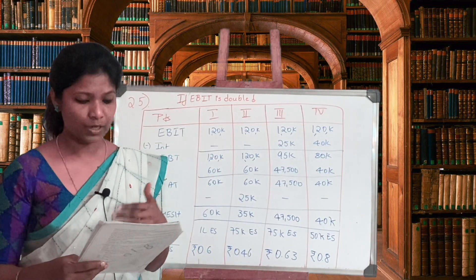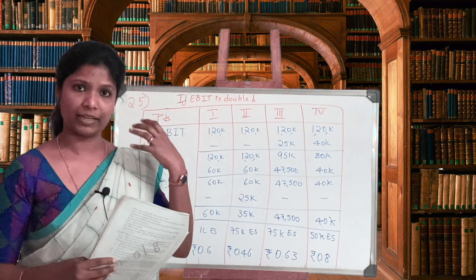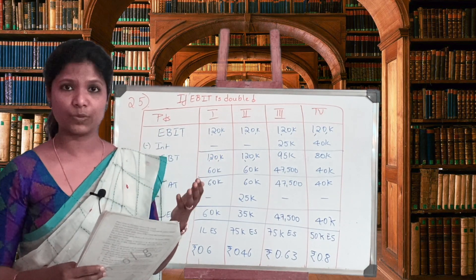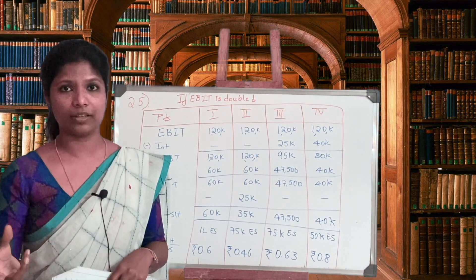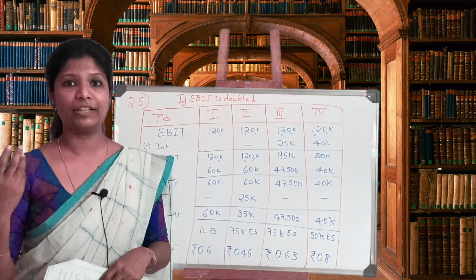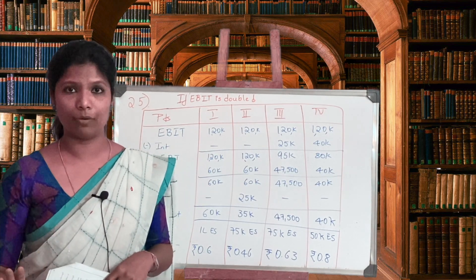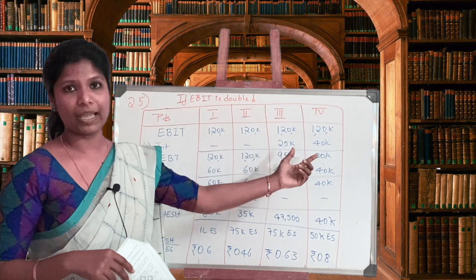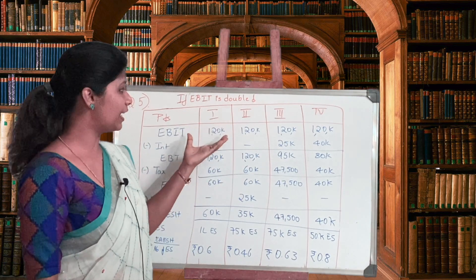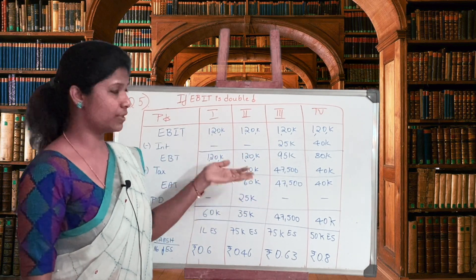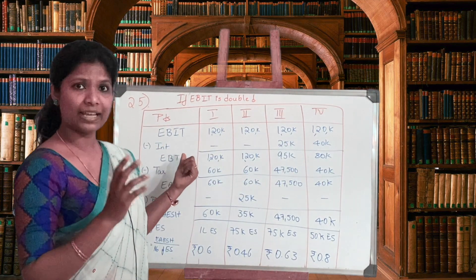The second part of the question asks: what would be the EPS if EBIT is doubled? The income statement format remains the same, except EBIT changes. In the first case EBIT was 60,000; now we double it. Interest on debenture and preference dividend remain unchanged, and the number of equity shares also remains the same. Only the EBIT changes — it is now doubled to 1,20,000, which is common for all four plans.